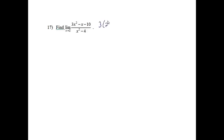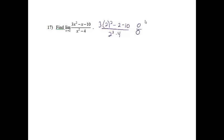Find the limit as x approaches 2. The first thing we would like to try is to just plug in 2 and see if we can get an answer. If I do that, I get 0 over 0, which we cannot divide by 0. That doesn't mean we don't have a limit — it just means we cannot do it that way.